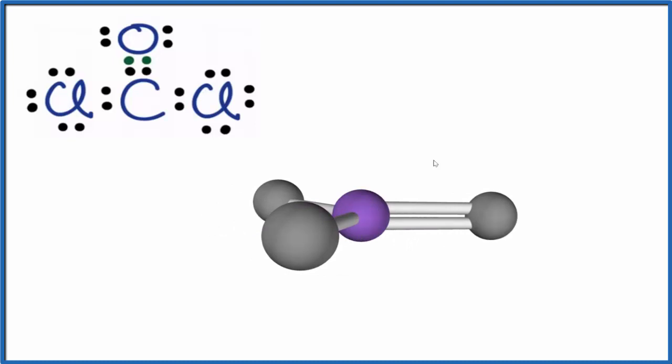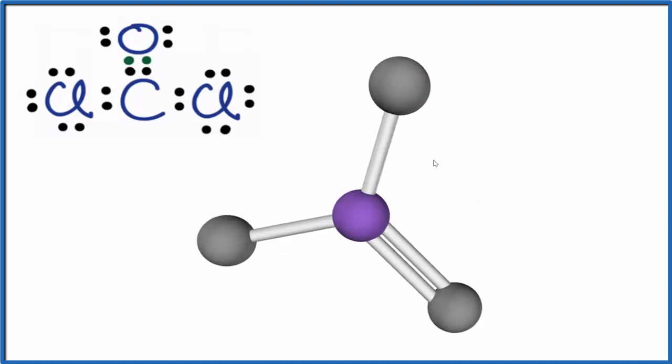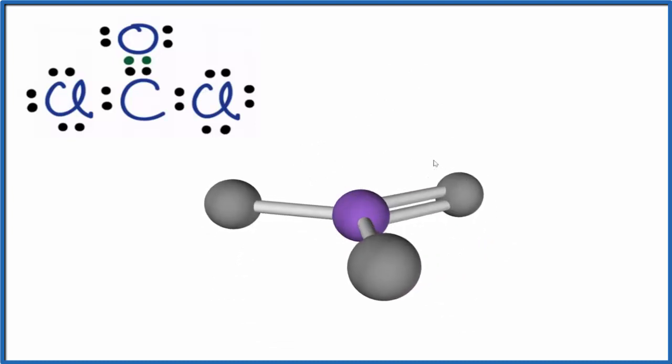The electron geometry, since there's no lone pairs, is also trigonal planar because it's in a plane with no lone pairs.